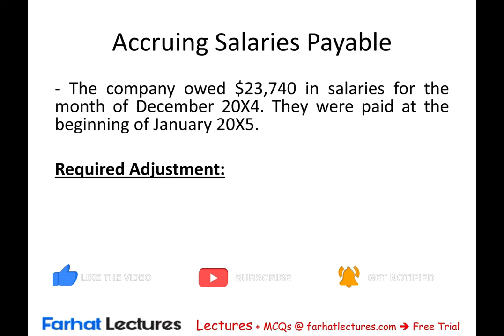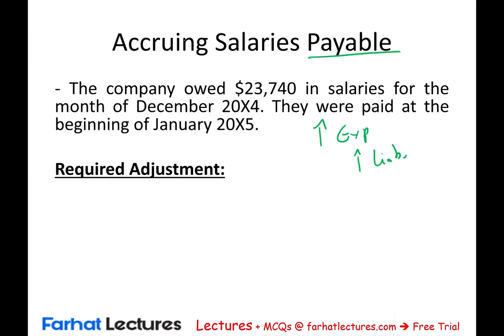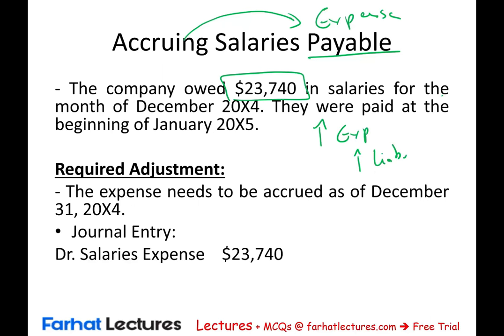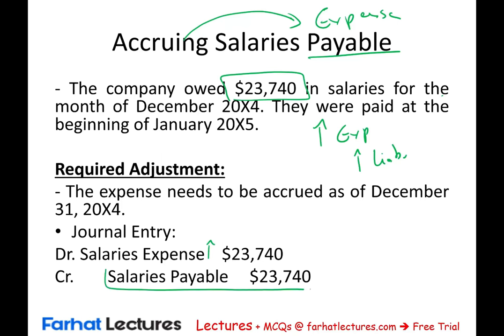Let's look at accruing salary expense — accruing a liability. When liabilities get accrued, you always increase an expense and increase a liability. Accruing a payable and accruing an expense mean the same thing. The company owed $23,740 in salaries for December, to be paid in early January. We accrue $23,740: debit salary expense, credit salaries payable. When the employees are actually paid in early January, we debit salaries payable and credit cash.